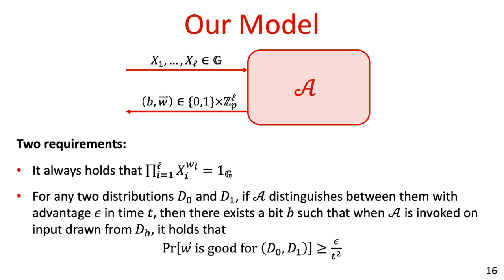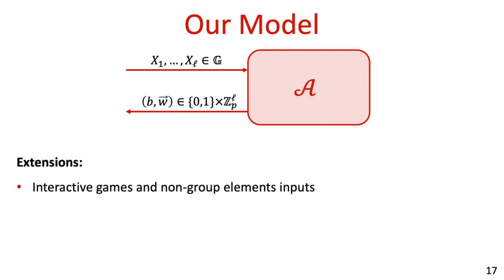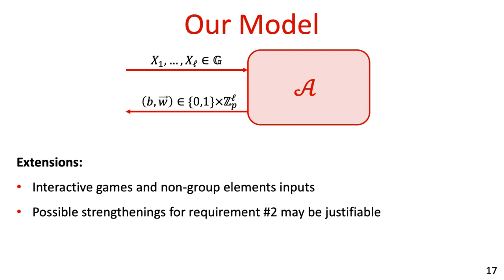At the moment it might be unclear where the term t squared comes from, but hopefully this will become clear in the coming slides. In the paper we consider extended versions of this definition: first, we define the DAGM for general interactive games in which adversaries can receive multiple messages from the challenger, and moreover these messages may contain additional information other than just group elements. Secondly, we also consider possible strengthenings of the requirement that w is good with probability at least epsilon over t squared.